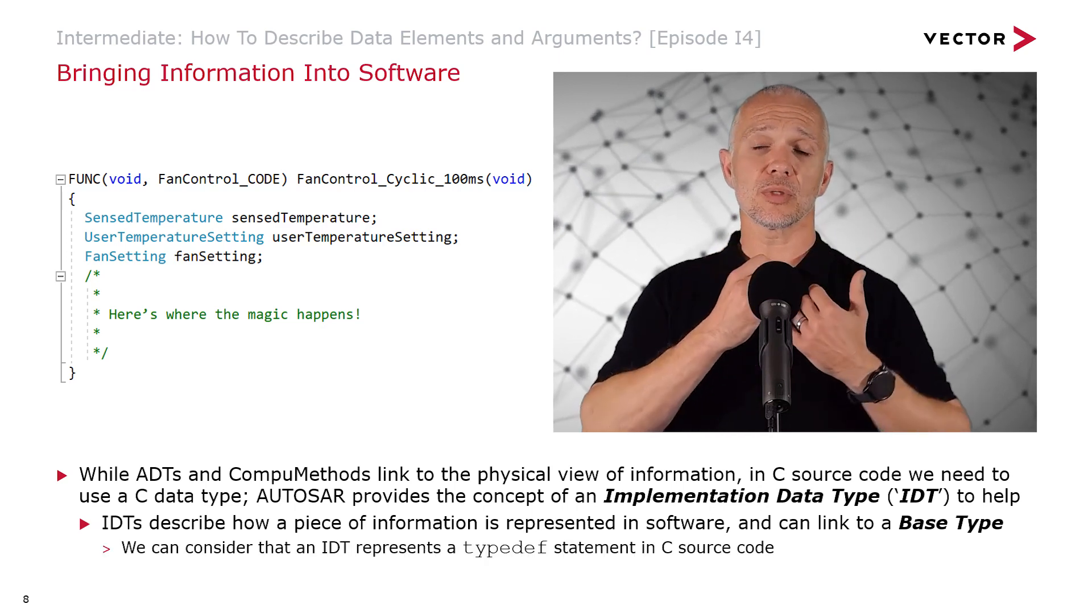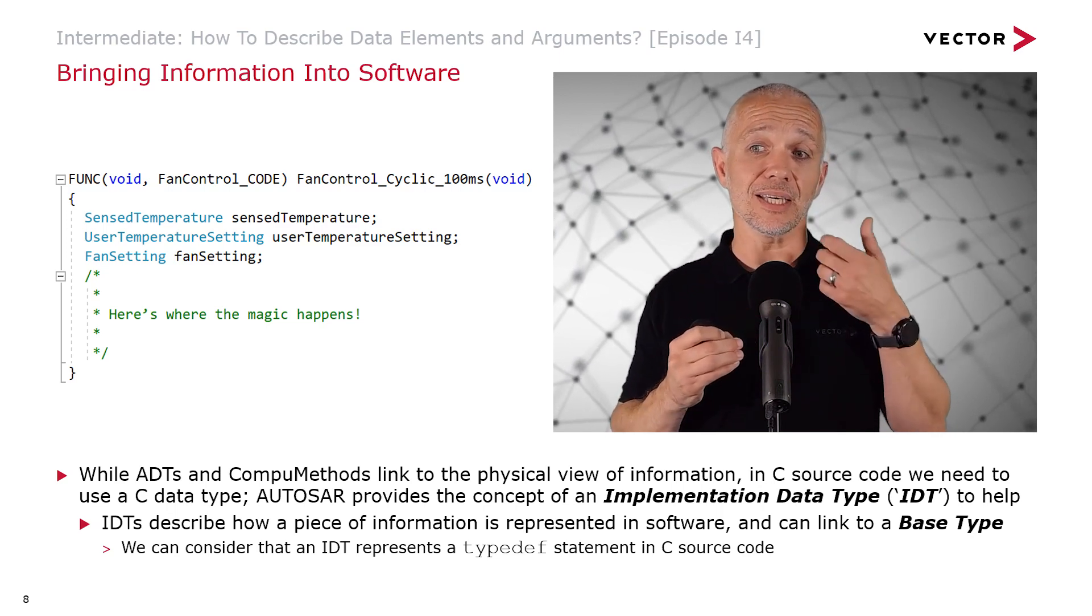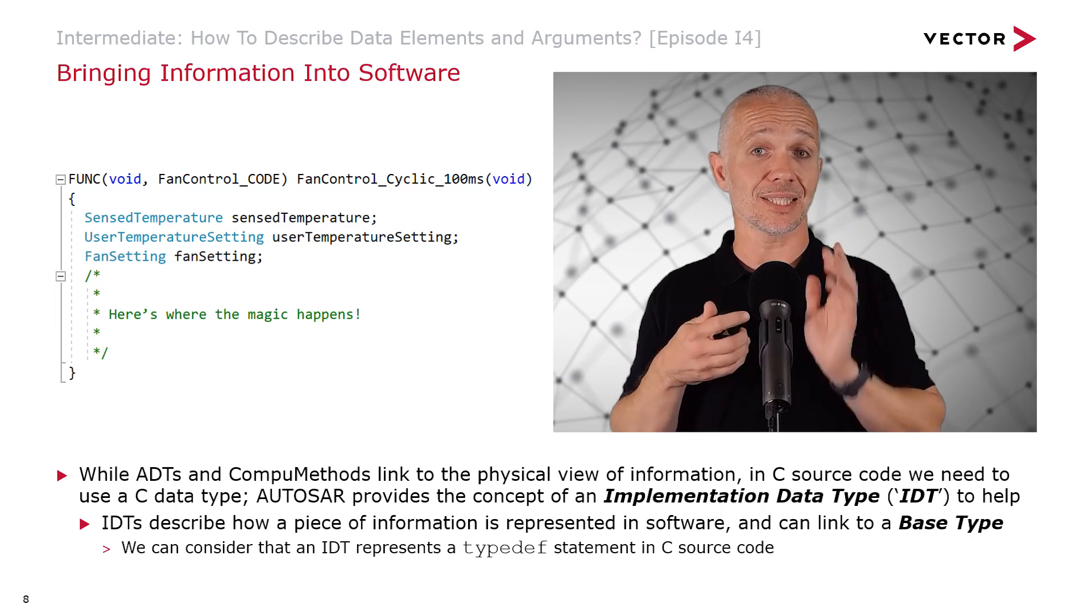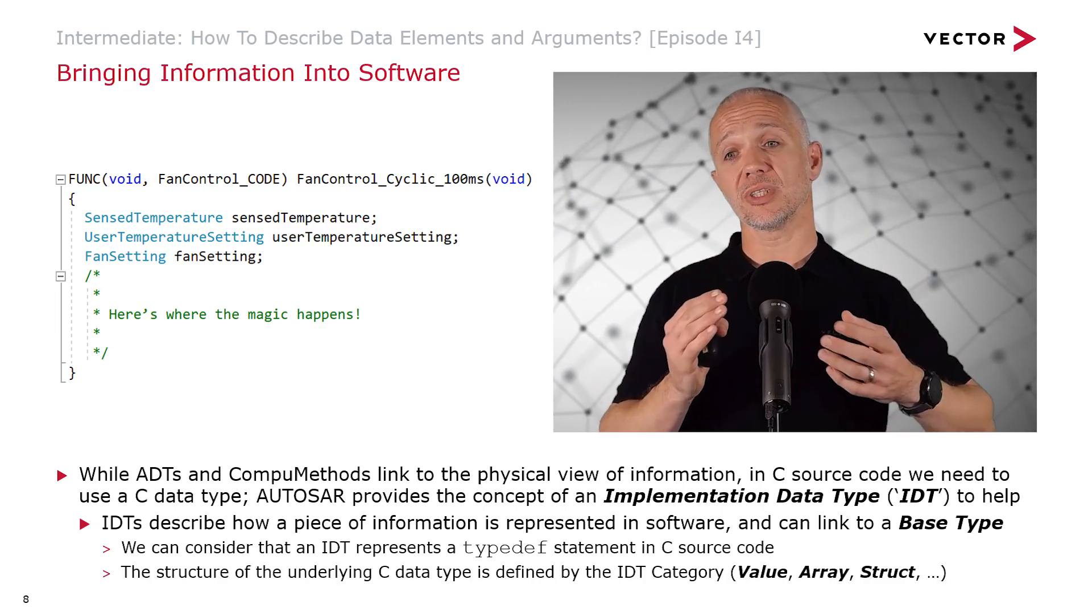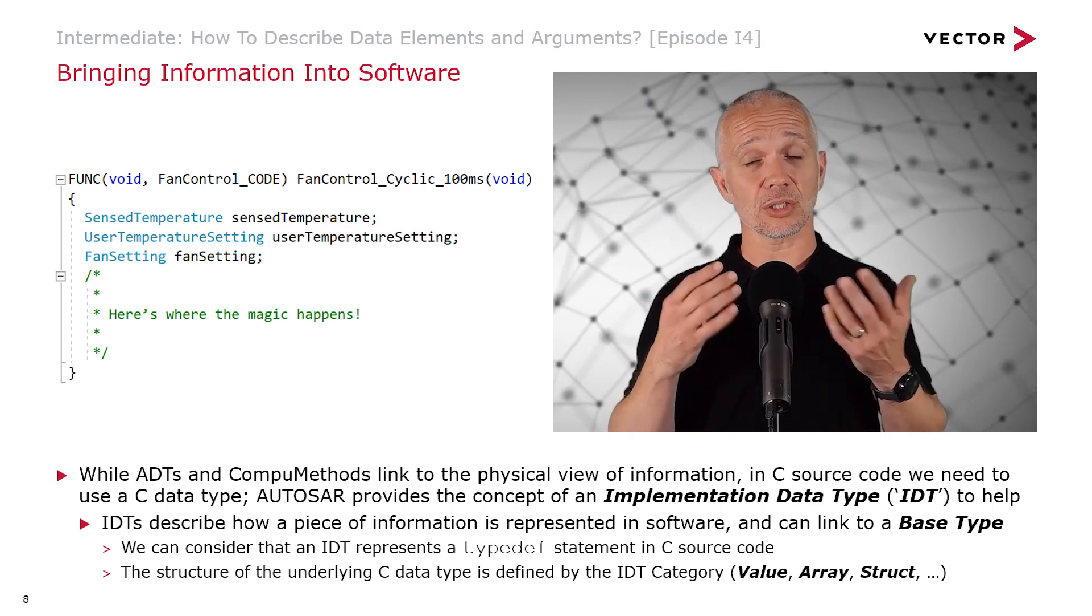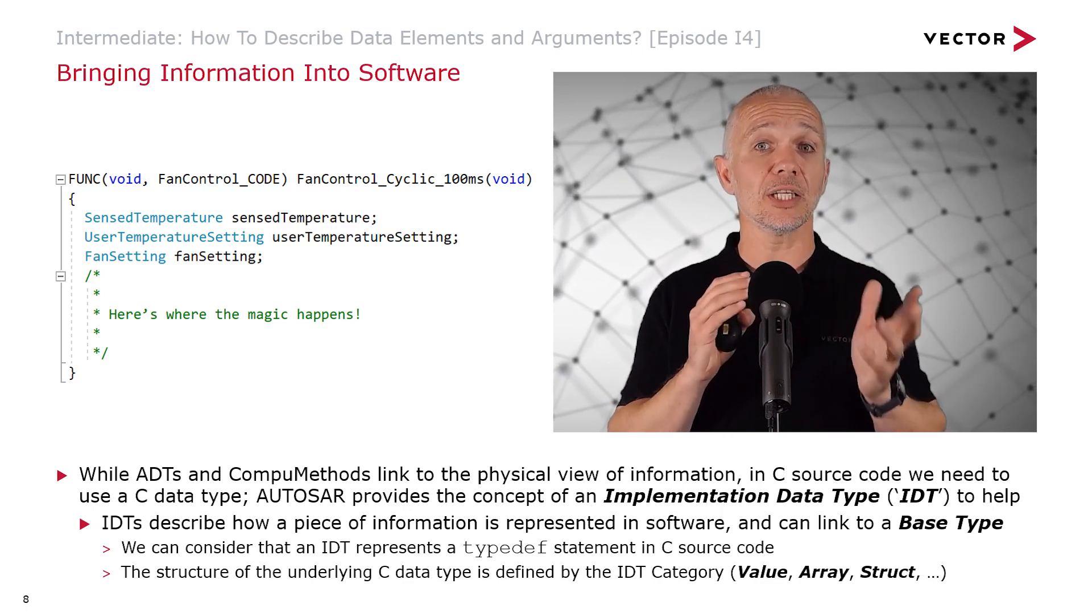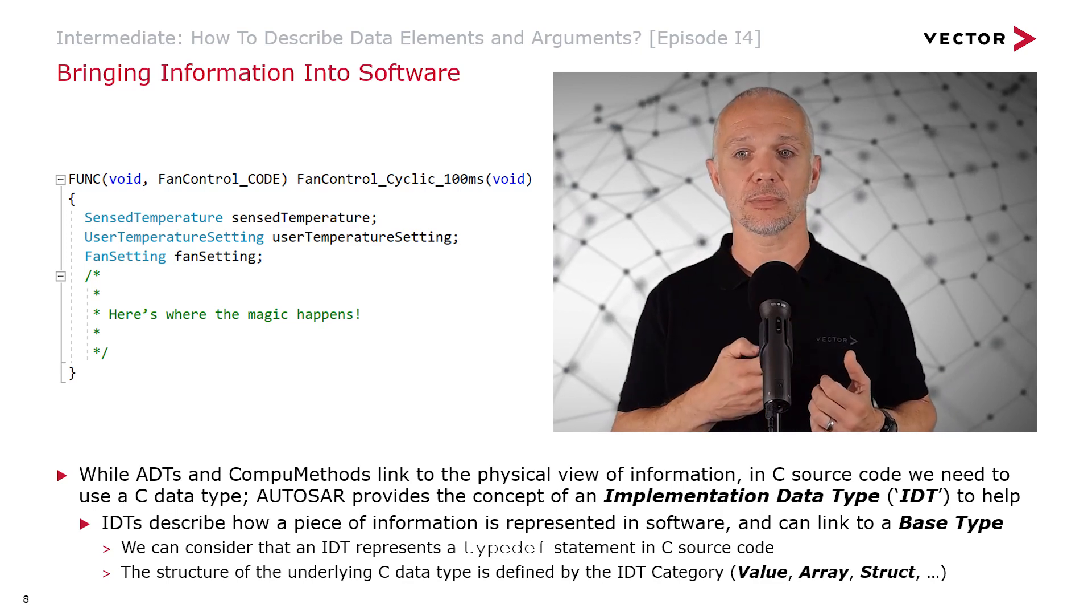IDTs describe how a piece of information is represented in software. We'll link to a base type, and we'll come back to those in just a moment. But if we really know our C, we can consider that an IDT represents, eventually, a typedef statement in C code. And the structure of the underlying C data type that we want to use in our software is defined by the IDT category. So it could be a value, an array, a struct, a record. Other categories are possible.